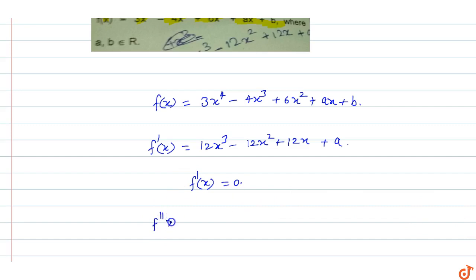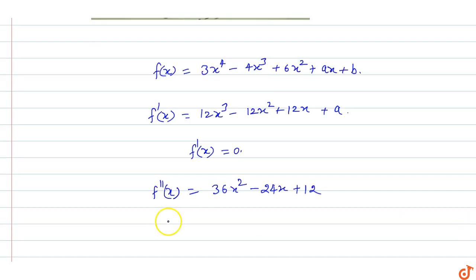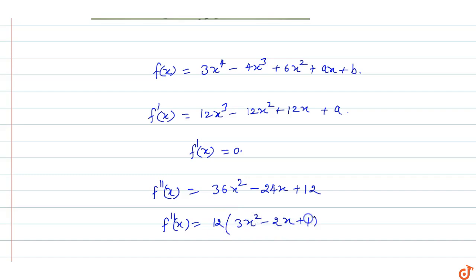Now find f''(x). Differentiating again, f''(x) = 36x² - 24x + 12. This simplifies to 12(3x² - 2x + 1).